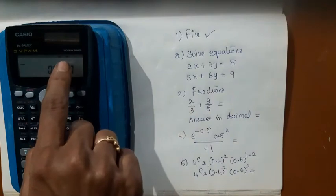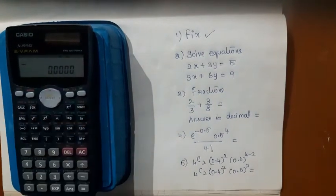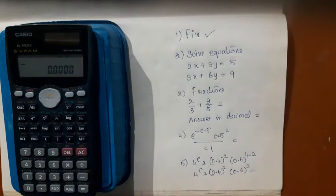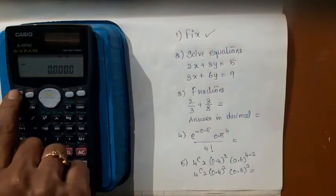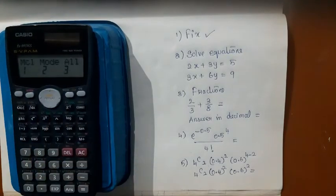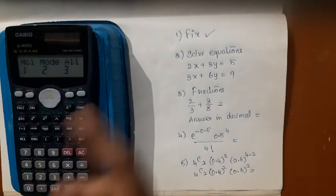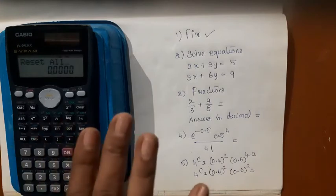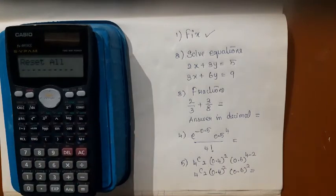While doing so, see, 'fix' appears on the screen. Now suppose you want to come out of this mode. You press shift mode, so shift mode. It is asking what should I clear: memory or mode or all? To be on the safer side, you say all three. Reset all comes, press equal to and all cancel. That's all, everything will get cancelled.